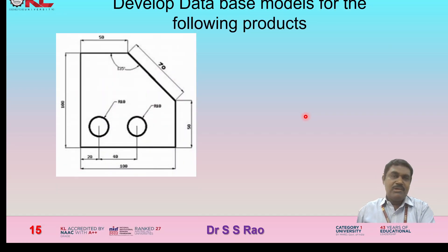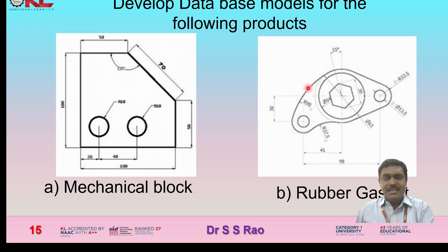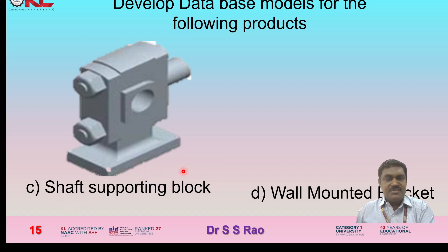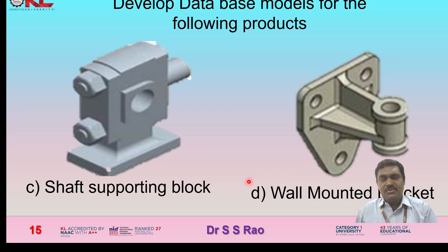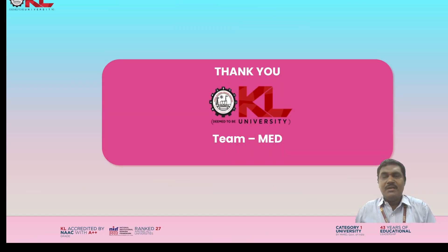Now let us see some examples — develop database models for the following products. You can prepare any of the four models for a mechanical block or a rubber gasket. There are also 3D models such as a shaft supporting block and a wall-mounted bracket. Practicing with as many problems as possible will build confidence in representing database structures for a given drawing. I hope everyone understands the database models and structures used in CAD. Thank you.